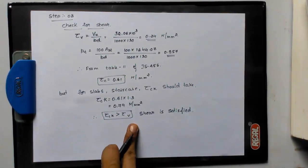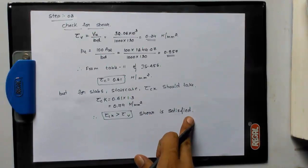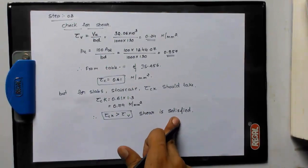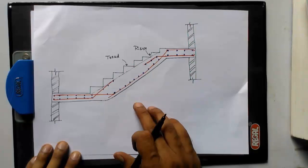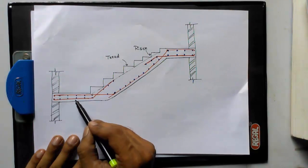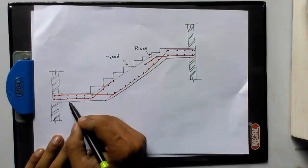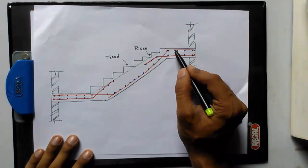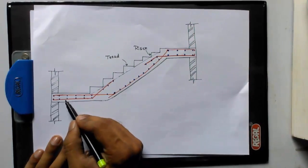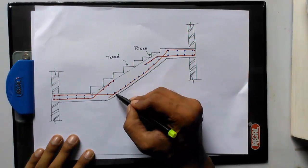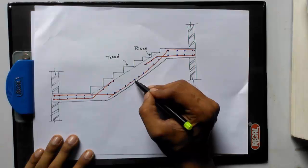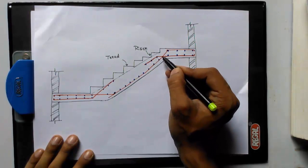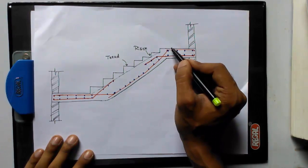So now we have seen the shear is satisfied. Now we need to draw the final figure. This will be the main bars. Here the tension zone will be at the bottom. When it comes to near supports, the tension zone will be at the top. Therefore, we need to provide steel at the tension zone and it continues.